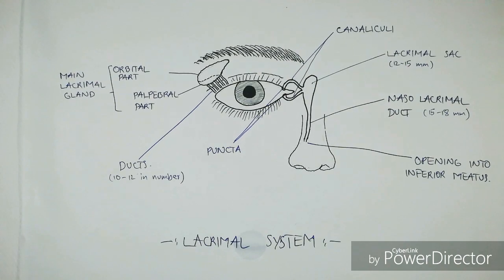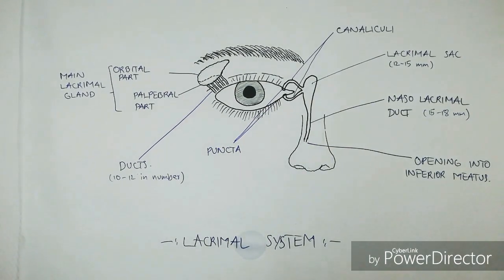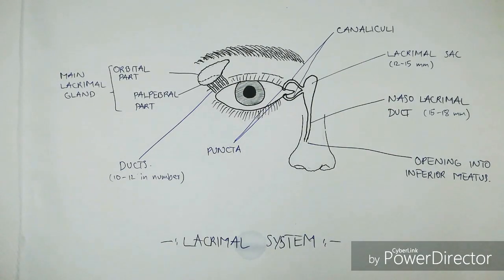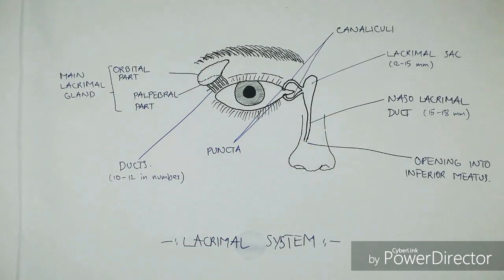Next up in the secretory system are the accessory lacrimal glands. These are less important, so we will just mention them briefly. One of them is the glands of Krause, and the others are the glands of Wolfring.